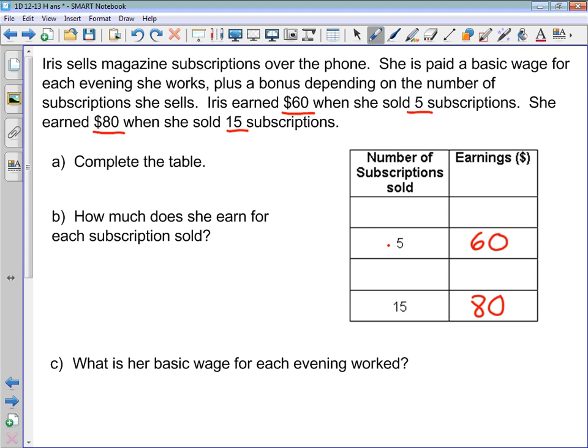But let's read carefully what they've told us here. She is paid a basic wage for each evening she works plus a bonus depending on the number of subscriptions she sells. So what we have here is a linear relationship. The basic wage is the part that is fixed, the fixed cost or the flat fee, and something that depends on the number of subscriptions that she sells. So this is our rate portion or our variable cost. That's what we can conclude from reading this very carefully, it's a linear relationship.